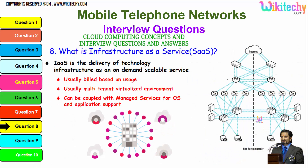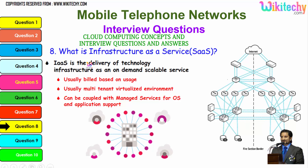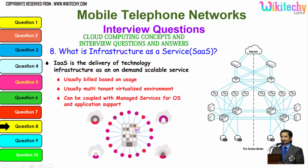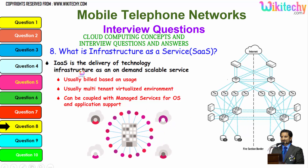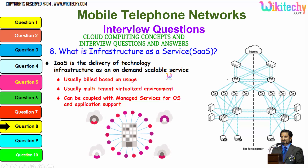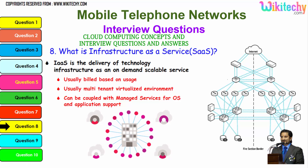Now let's talk about Infrastructure as a Service. You will be allocated a server and you can configure it any way you want — put whatever software you want. IaaS is a delivery of technology infrastructure as an on-demand deliverable service. It is a scalable service built based on usage, usually multi-tenant and virtualized.